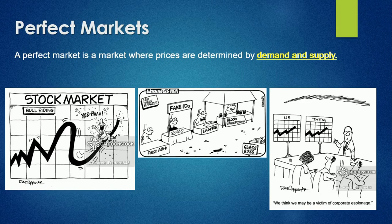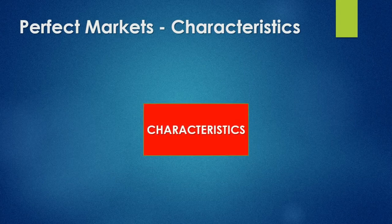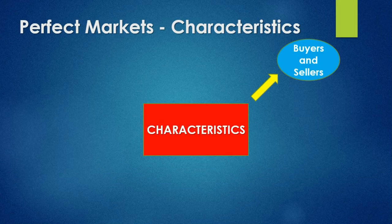So what makes up a perfect market? Here we're going to have a look at the characteristics and what they are made up of. We look at buyers and sellers — how many buyers and sellers are in this market. There are many buyers in this market and many people selling goods in this market.